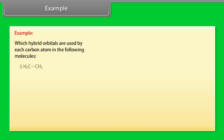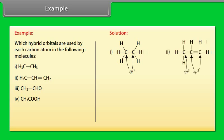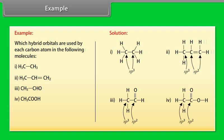Example on hybridization: which hybrid orbitals are used by each carbon atom in the following molecules? In these molecules, carbon atoms use SP2 and SP3 hybridization.